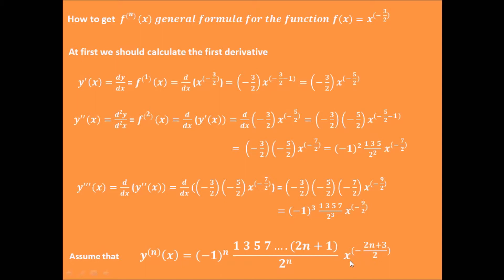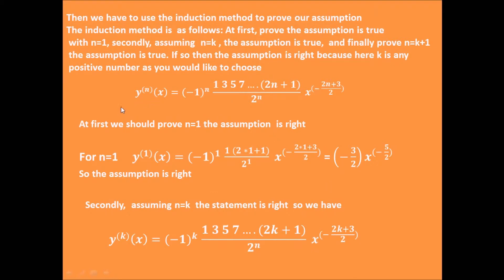Then we have to use the induction method to prove this assumption is right. The induction method works as follows: first, we prove that when n equals 1, the assumption is right. Then we assume that when n equals k, the assumption is right. Based on that assumption, we have to prove that when n equals k plus 1, the assumption is also right. If so, then the assumption is true, because k is just any positive number, so the statement holds for all k.